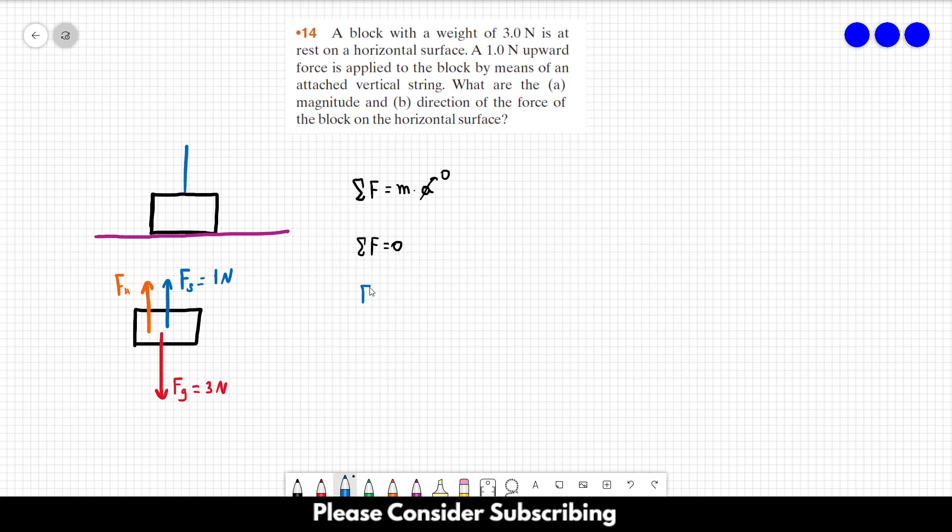So Fs plus Fh minus Fg is equal to zero. So we want to find Fh.